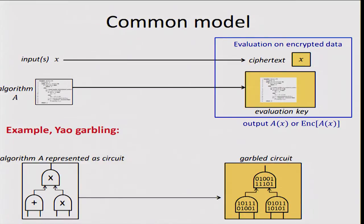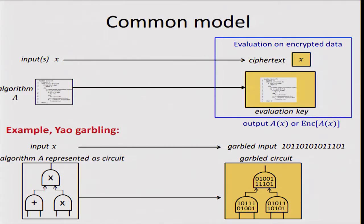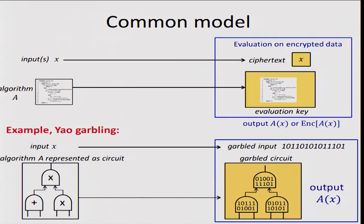Let me give you an example using Yao garbling, which most of you should be familiar with. Algorithm A, represented as a circuit, gets converted into a garbled circuit, which corresponds to the evaluation key in our abstract model. The garbled circuit is pretty much the original circuit but with gates replaced by lists of binary strings. An input gets garbled into a set of binary strings, and we run the evaluation using the garbled circuit over the garbled input to obtain A of X.